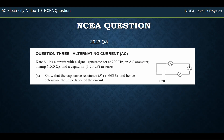So Kate here built a circuit with a signal generator. We've got an AC voltage source set at 200 Hz, an ammeter which measures the current, light bulbs, a resistor, and capacitors in series. So this is an RC circuit — a resistor-capacitor circuit.